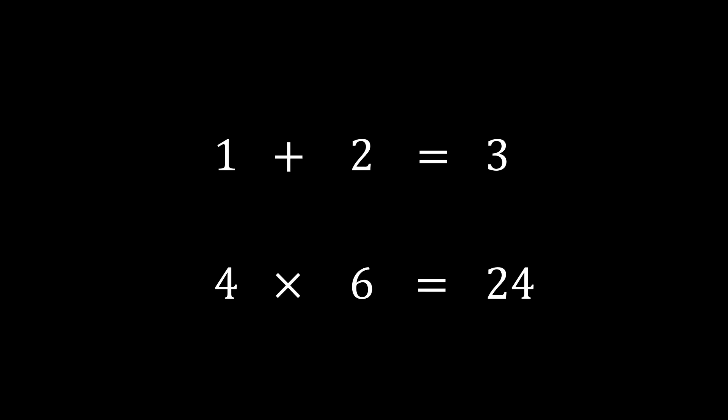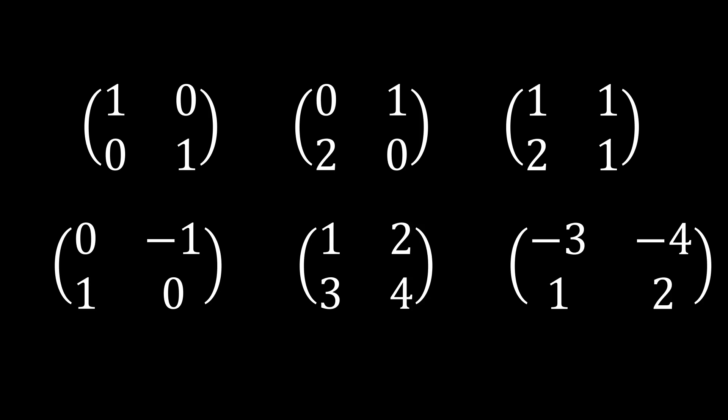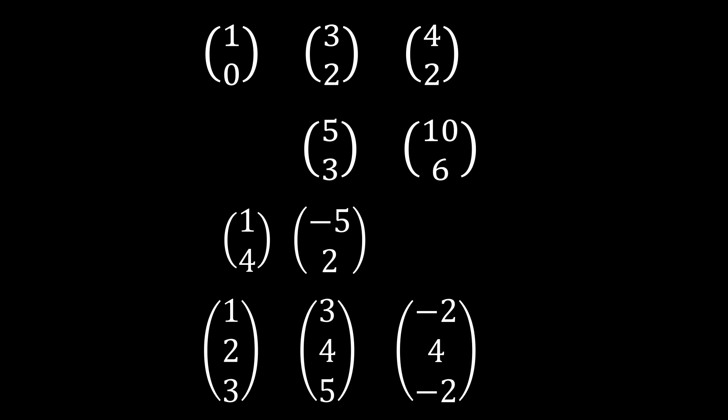In school, you learn basic operations on numbers — addition and multiplication. Then later, you learn about matrices and operations on them, also called addition and multiplication. Around the same time, you learn about vectors and operations on them: one is addition, and the others are multiplication by a scalar, the scalar product, and the cross product. You might ask yourself: why use these same names if they aren't the same operation?